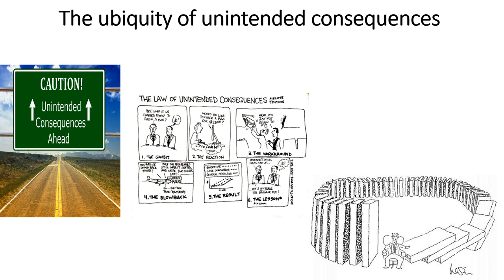The ubiquity of unintended consequences. What does ubiquity mean? It means kind of everywhere — if something is ubiquitous, it's all over the place. Unintended consequences crop up a great deal in history. If you force yourself to get good at seeing and finding them, you'll probably find some in our textbook that I haven't even thought of. Unintended consequences often help us understand some of the quirks and long-term developments in history.